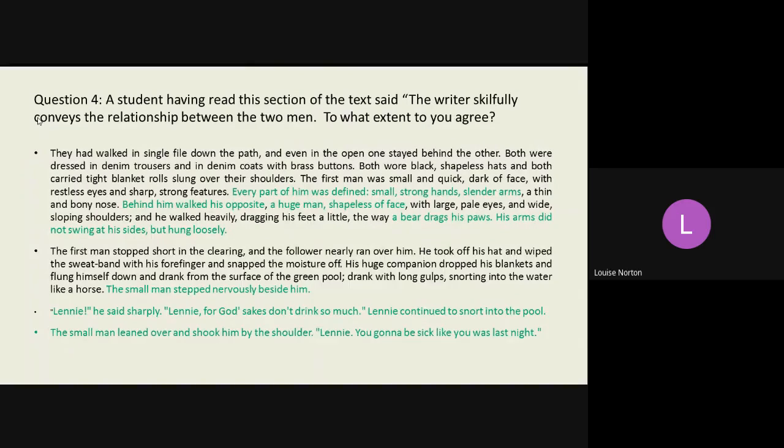So, if we were having a look at this section from the final part of the extract, we could look at the parts that are highlighted in green and we could think about how do these quotations convey the relationship between the two men. Now, question four, the focus is on what is the writer trying to do? How does the writer make the reader feel? And to ensure success at this question, this is what you need to focus on.